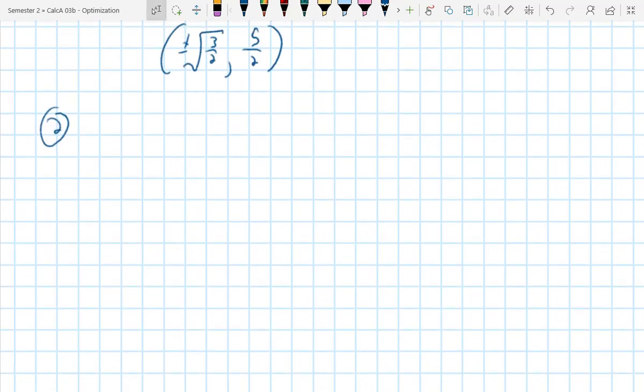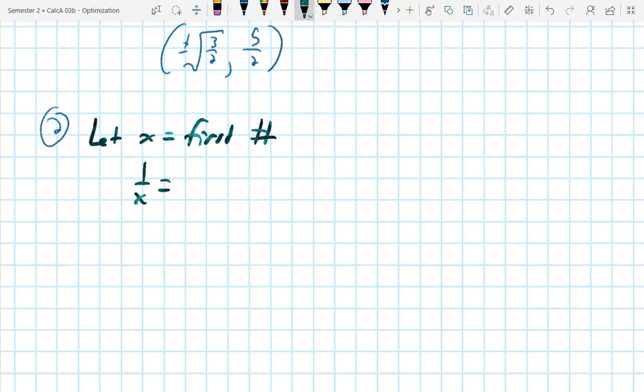Number two talks about two positive numbers, that the second number is the reciprocal of the first, and the sum is the minimum. So I'm going to let x equal the first number, which means that 1 over x is the reciprocal,